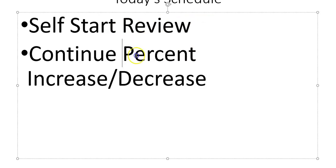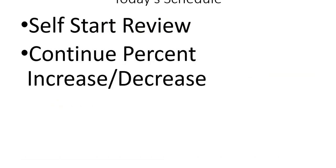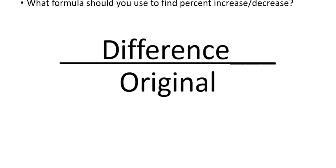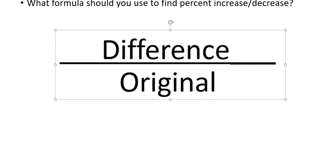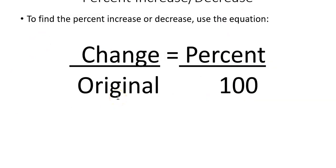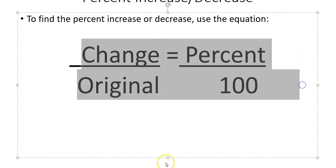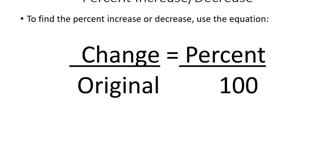Today we did this self-start review, and then we're going to continue our percent increase and decrease, with the objective that you can calculate percent increase for your own personal numbers. The formula to use is: difference over original, or change over original equals percent over 100. Some other math teachers prefer the first form — I want to give you both so you're familiar with them. They mean the same thing.